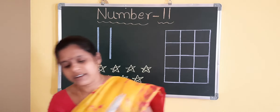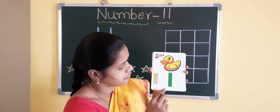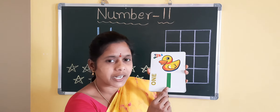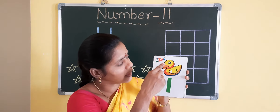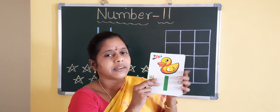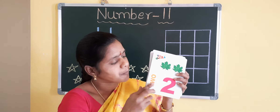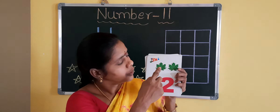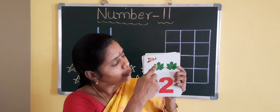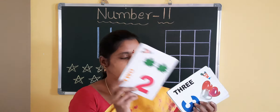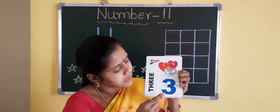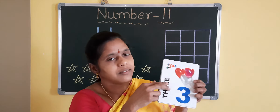Children, see these flashcards. Which number is this? Yes, this is number 1. 1 duck. 2, 2 lids. 3, 3 balance.